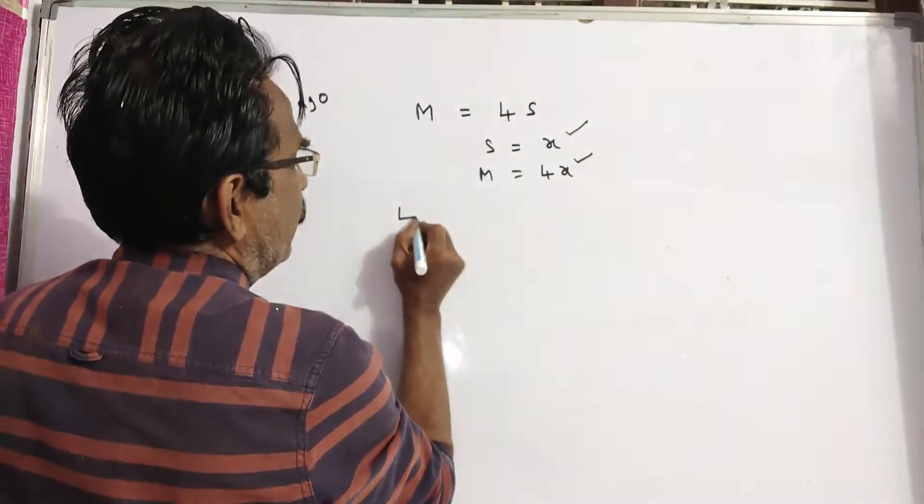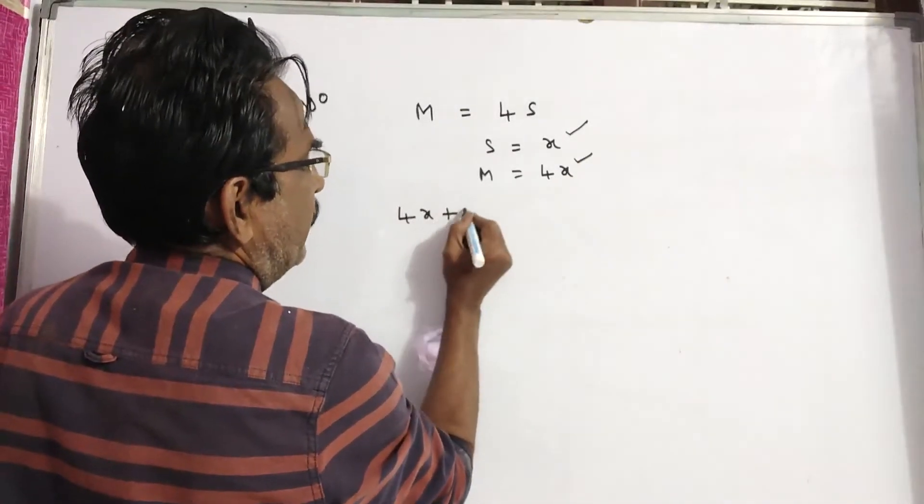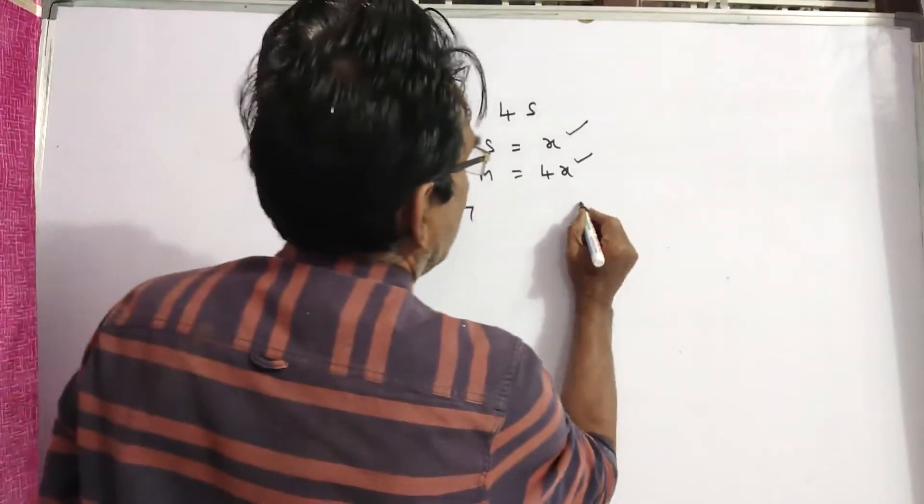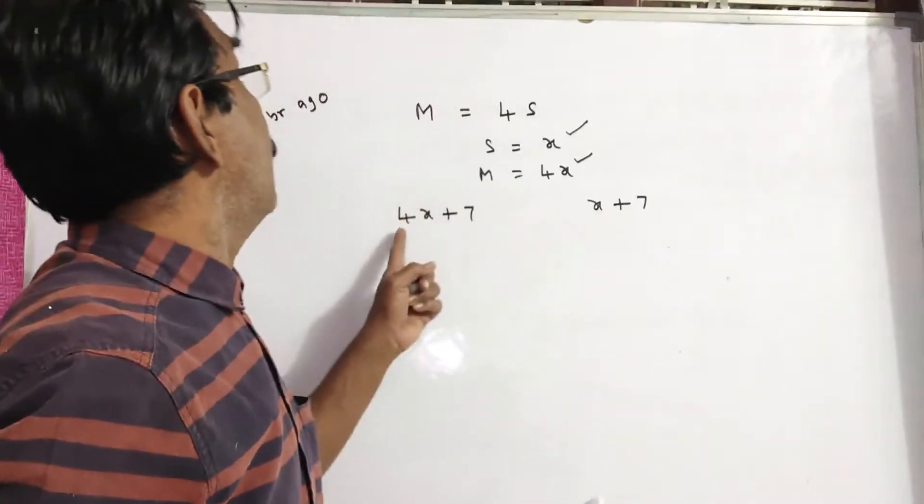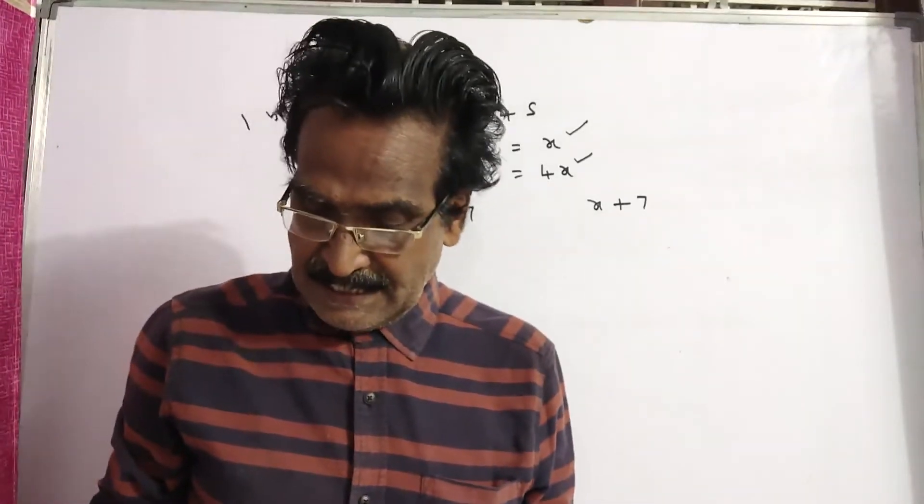So man will be 4X plus 7. Son will be X plus 7. This is the age after 6 years.